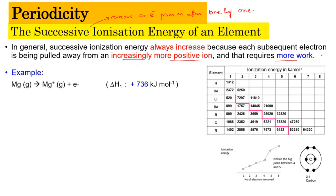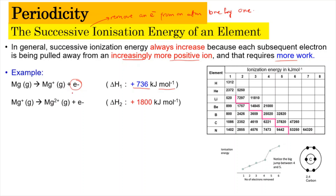For example, if you have a magnesium gaseous atom and you want to remove the first electron, the energy required is only 736 kJ per mole. But if you continue removing electrons from magnesium, when you remove the second electron — taking from the magnesium gaseous ion to become magnesium 2+ gaseous ion — the energy is going to get higher.